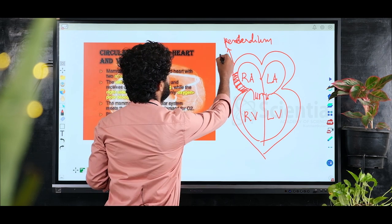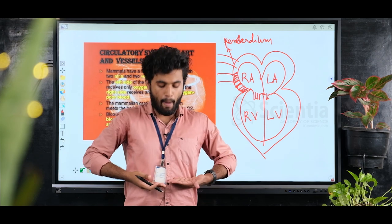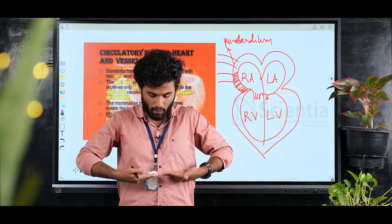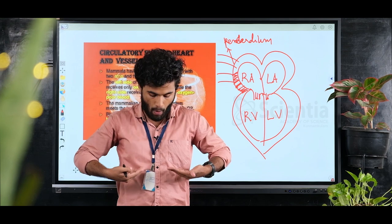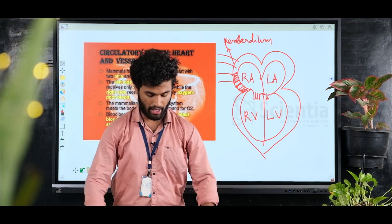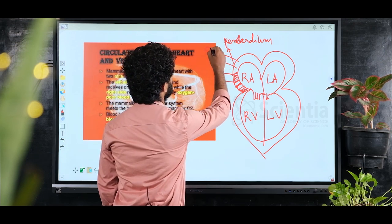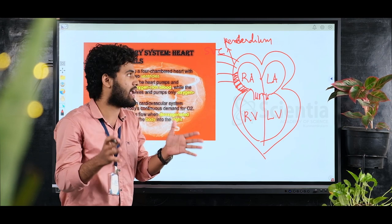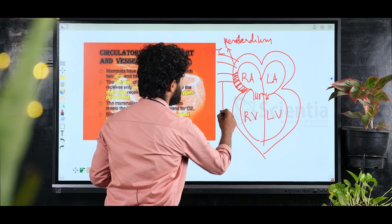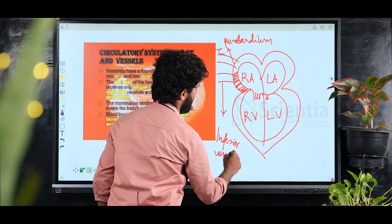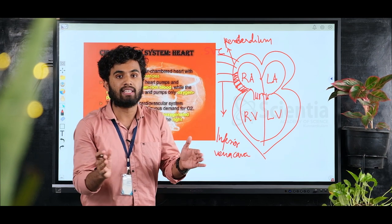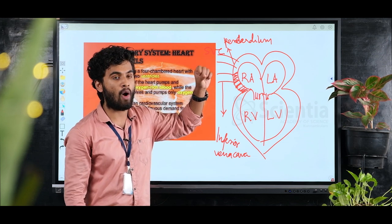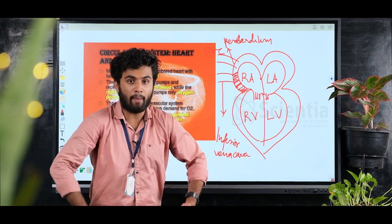The associated vessels include the superior vena cava, which drains the upper part of the body — that is, above the diaphragm — and the inferior vena cava, which drains the lower part of the body. 'Vena cava' means large veins.